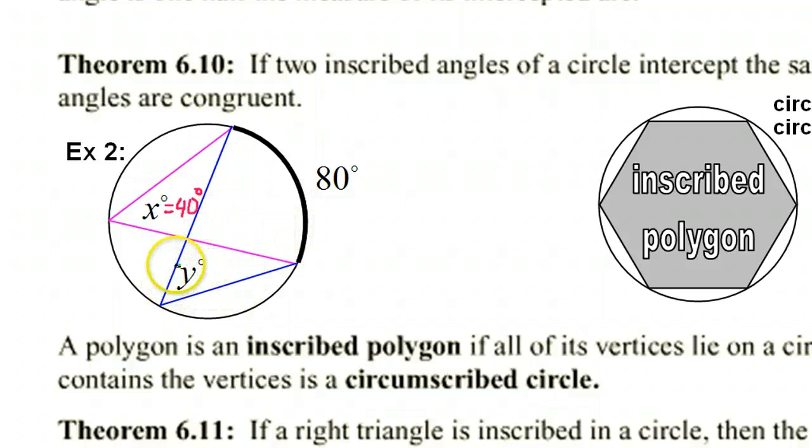Now, switch your eyes and look at the y, the blue angle. How many degrees is y? Well, the blue angle is also an inscribed angle with the same 80-degree arc intercepted. So guess what? y is also going to be 40 degrees.